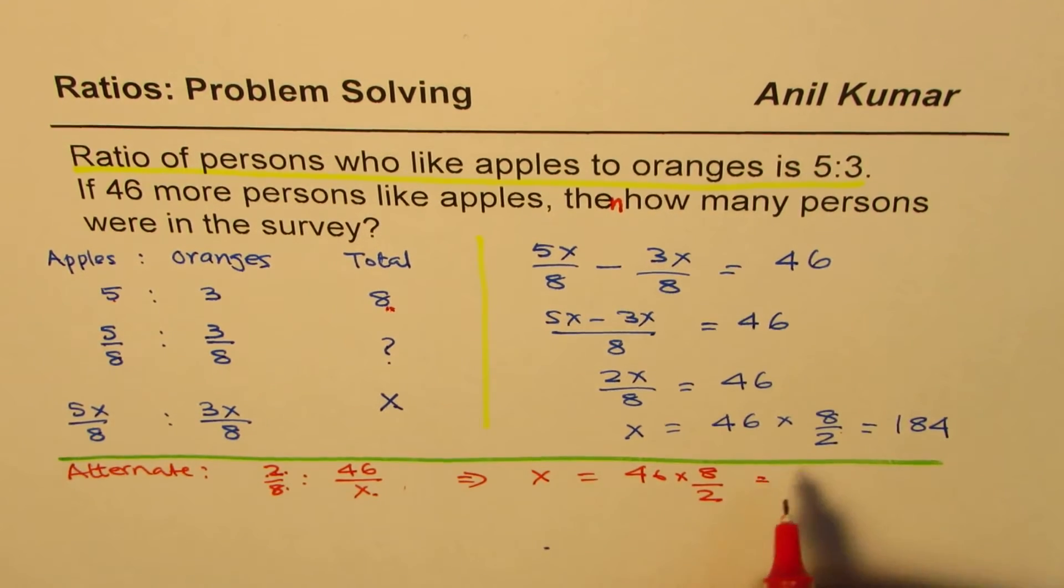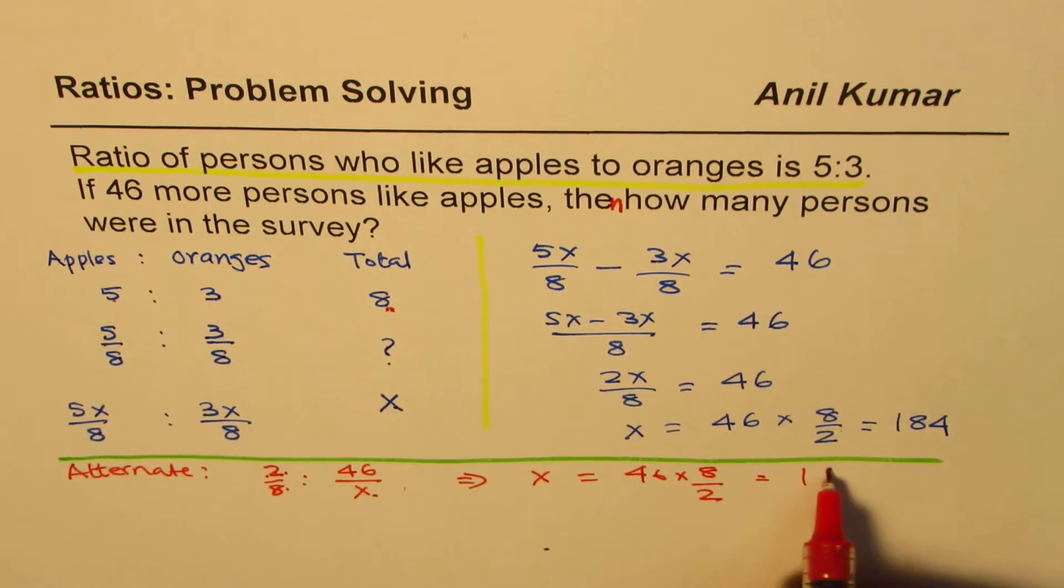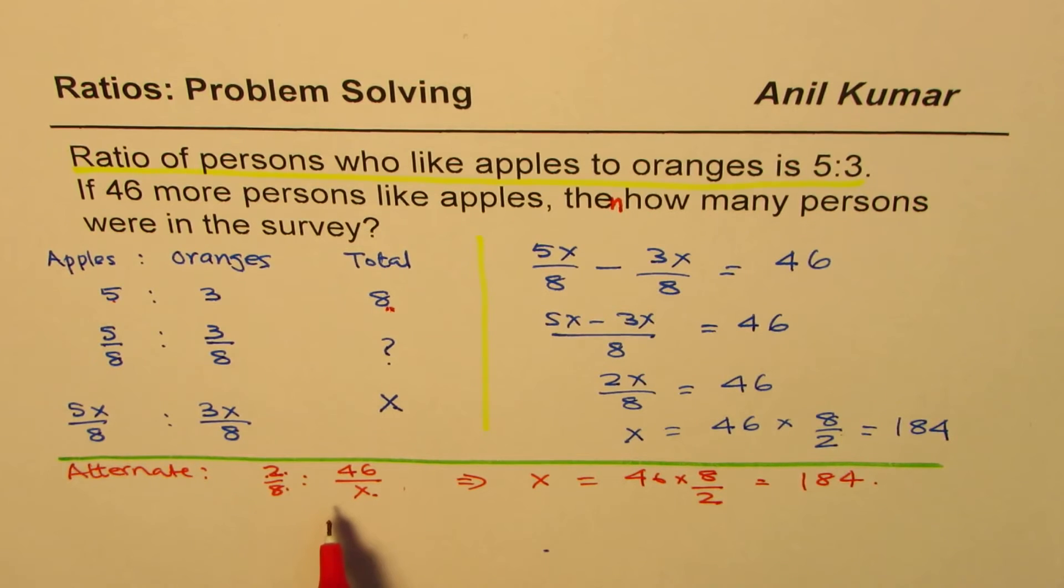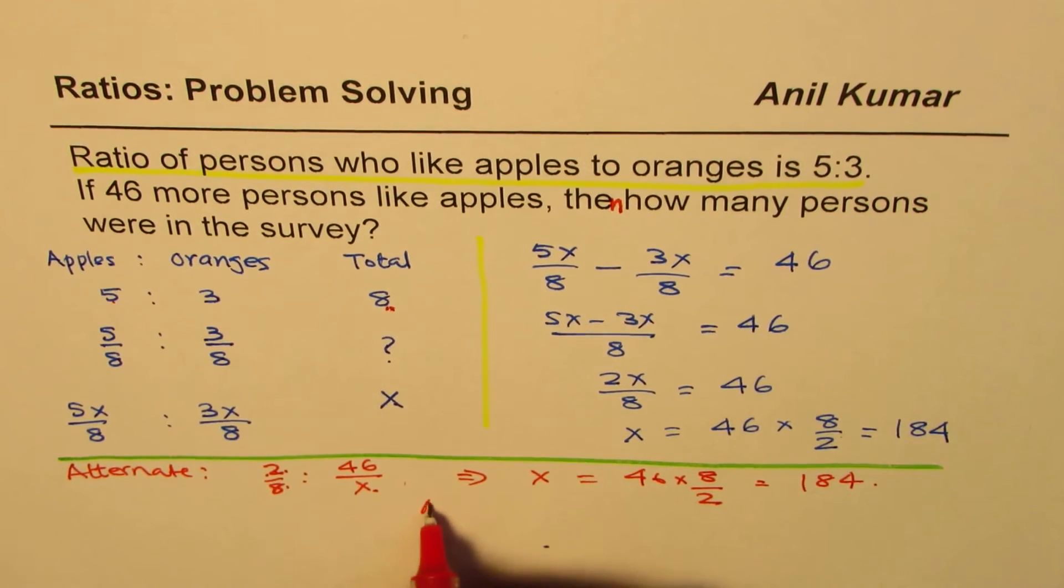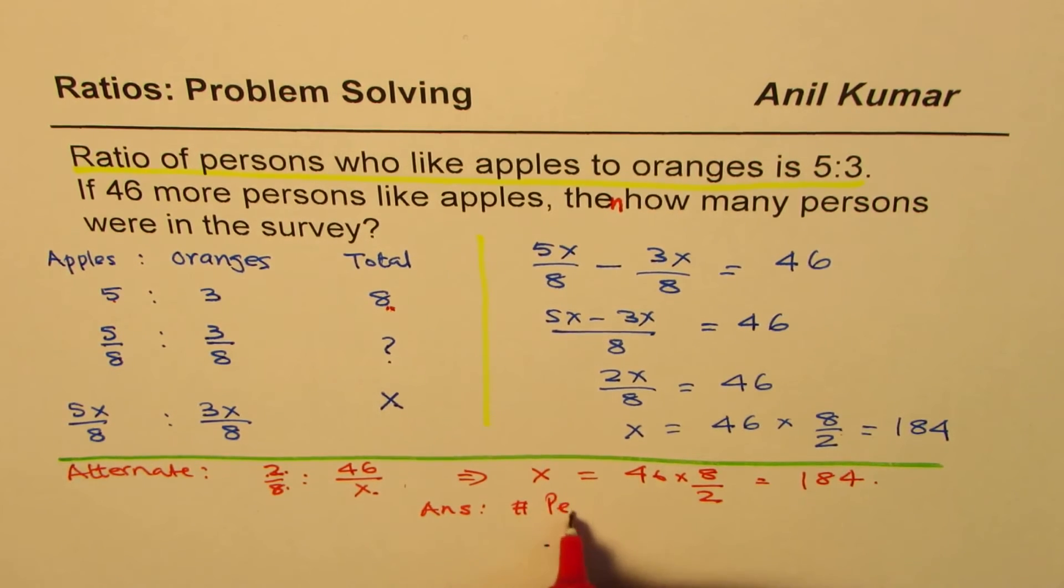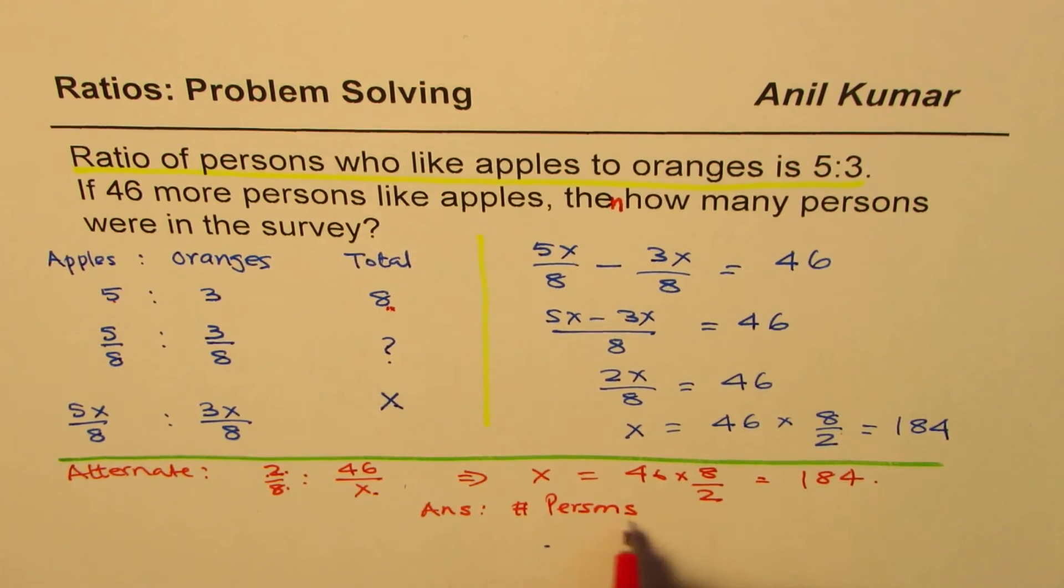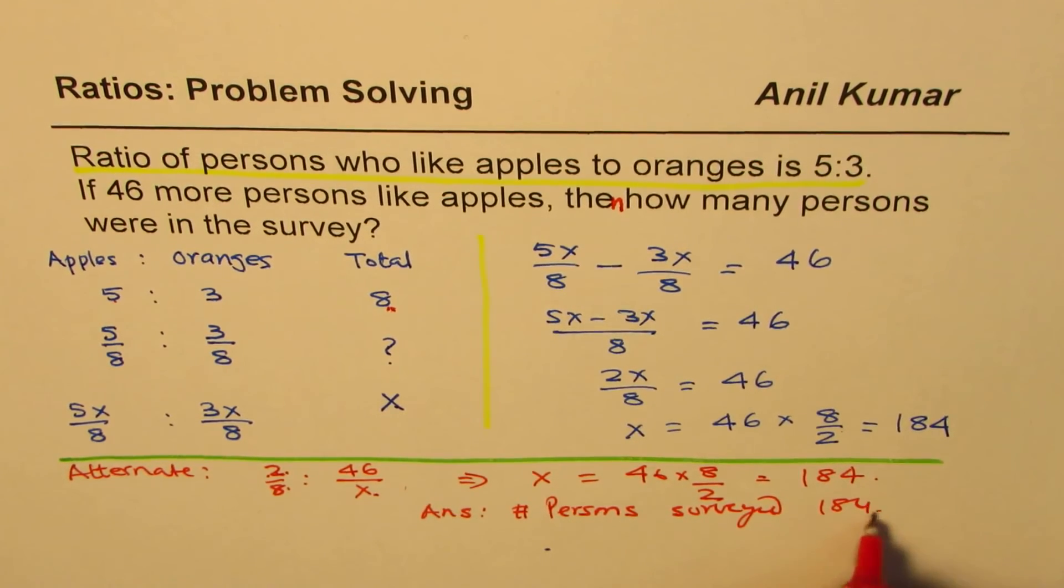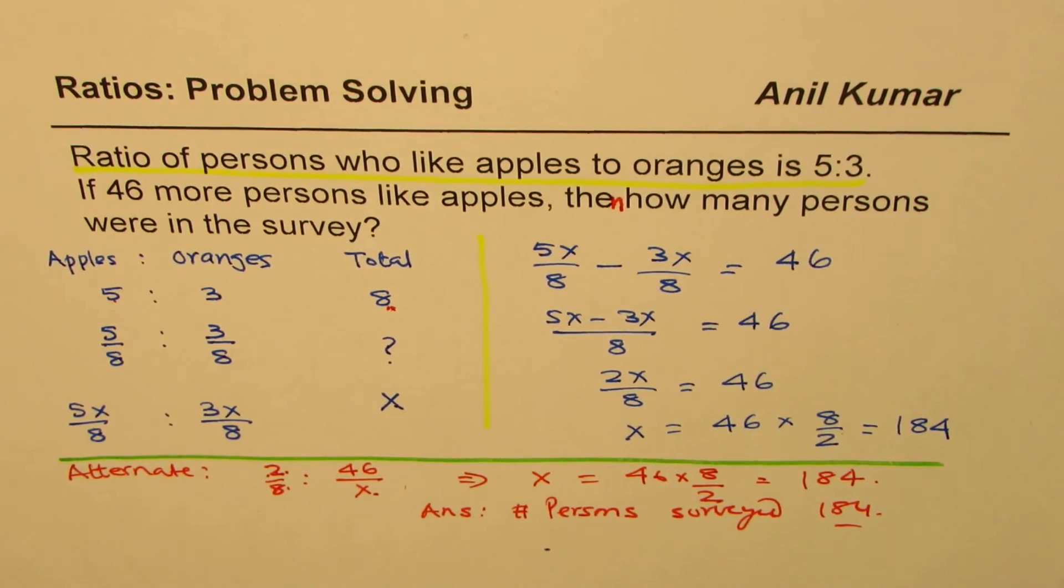We get exactly the same answer, which is 184. So getting the concept of ratio is very important. At times, if you use this kind of method, you save a lot of time to solve such questions. So the answer is, number of persons surveyed is 184.